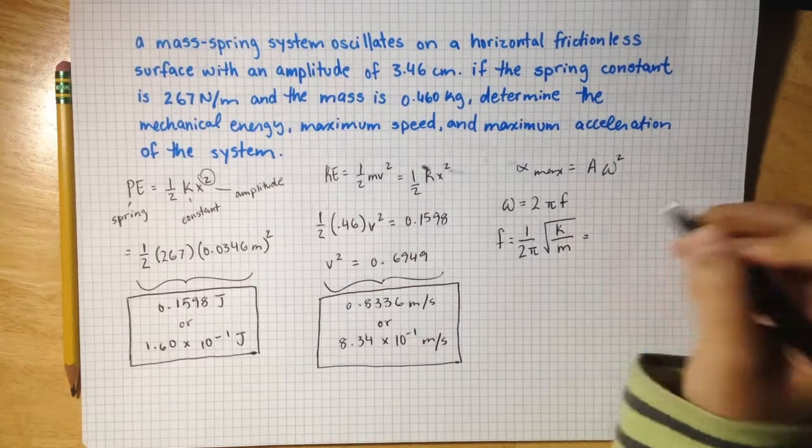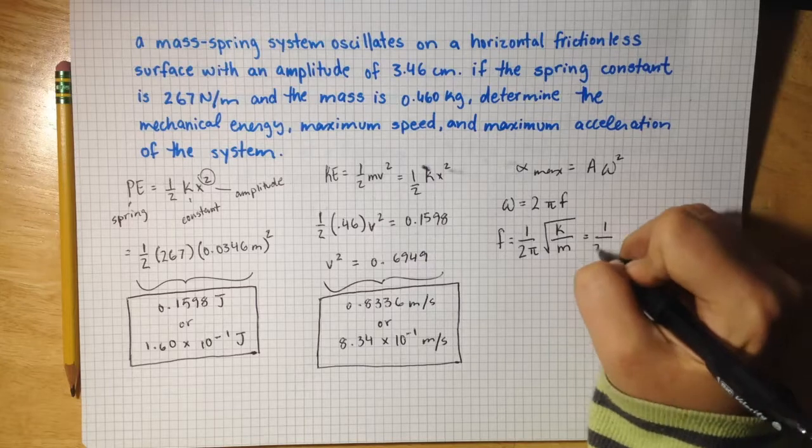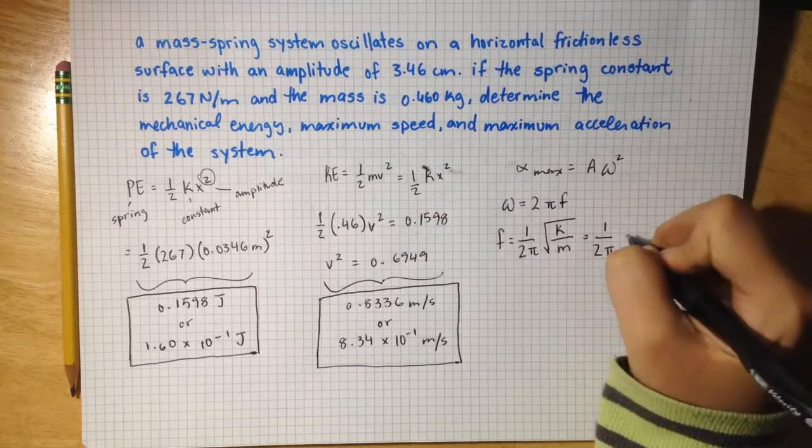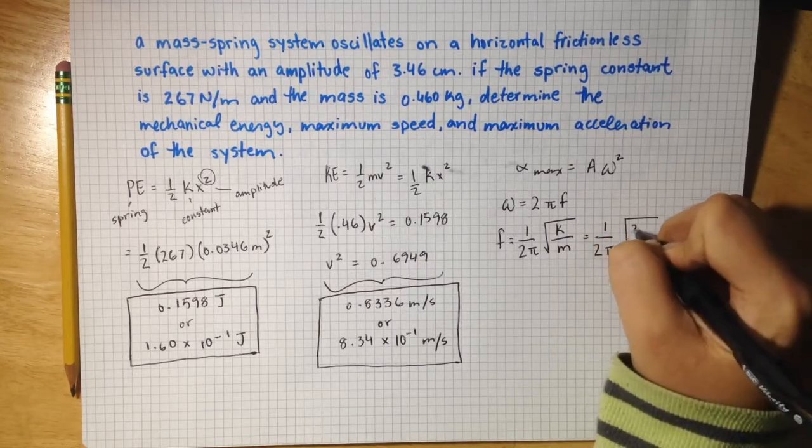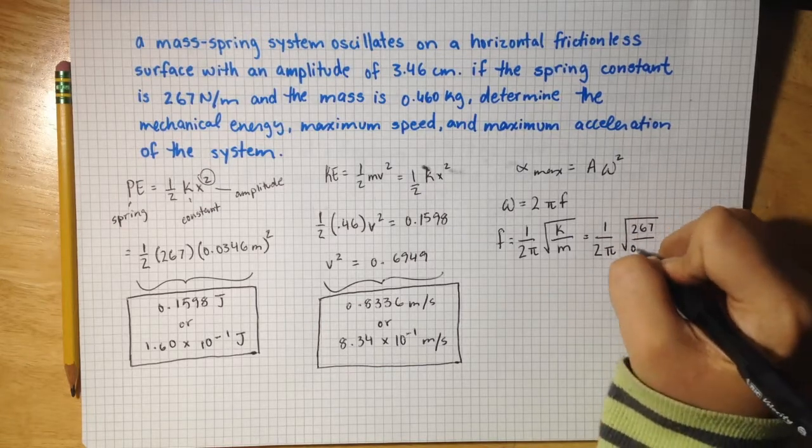So I'm going to plug numbers in from the question and get 1 over 2 pi times the spring constant, which is 267, over the mass, which is 0.46.